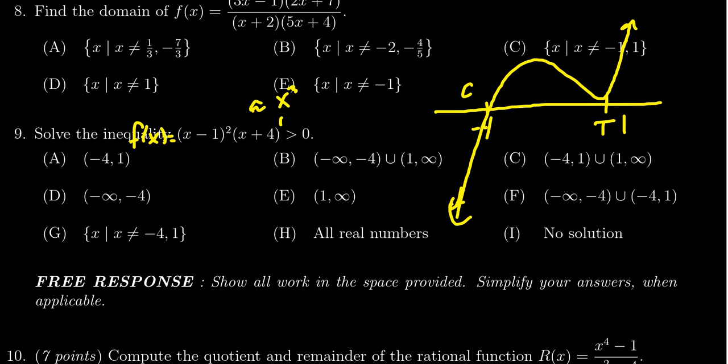So now the thing we're looking for is what happens above the x-axis, right? So we want f of x to be greater than 0. That means we're looking for things above the x-axis. So that happens here from negative 4 to 1. And it also happens from 1 to infinity.